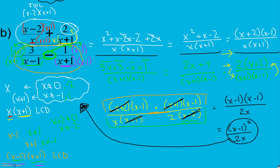These look like kind of long problems, and they are a little bit, but the more you do these and the more comfortable you get with them, the fewer of these steps you'll necessarily have to write out. For these complex fractions: simplify the numerator, then the denominator, and then divide them.